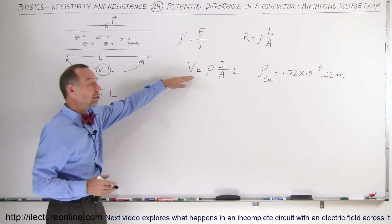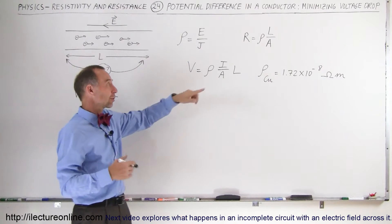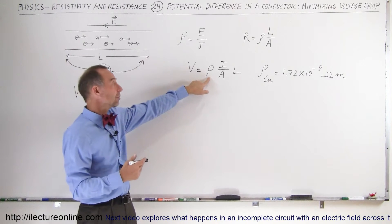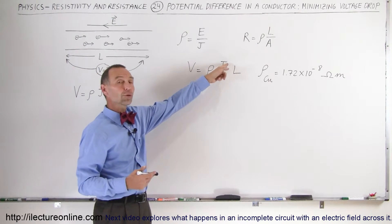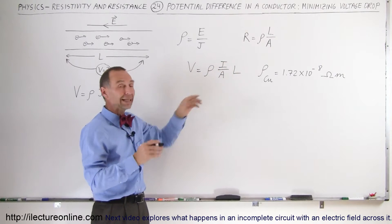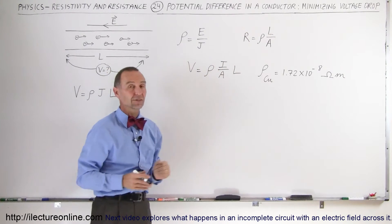We already realized that the potential difference across a conductor carrying a current is equal to the resistivity of the material, the current going through the conductor divided by the cross-sectional area times the length of the conductor.